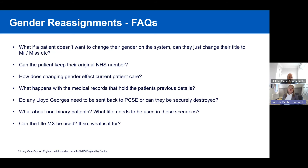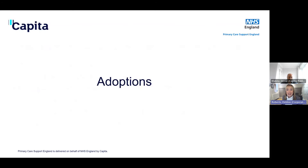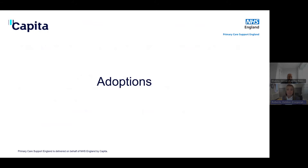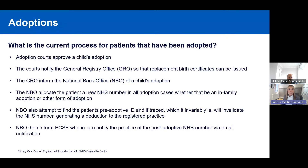Looking at adoptions: adoptions go through the family courts, which approve the adoption and replacement birth certificates are issued. This information goes to the General Registry Office (GRO), who inform the National Back Office of the child's adoption. The National Back Office then allocates an NHS number in the post-adoptive identity for the patient.